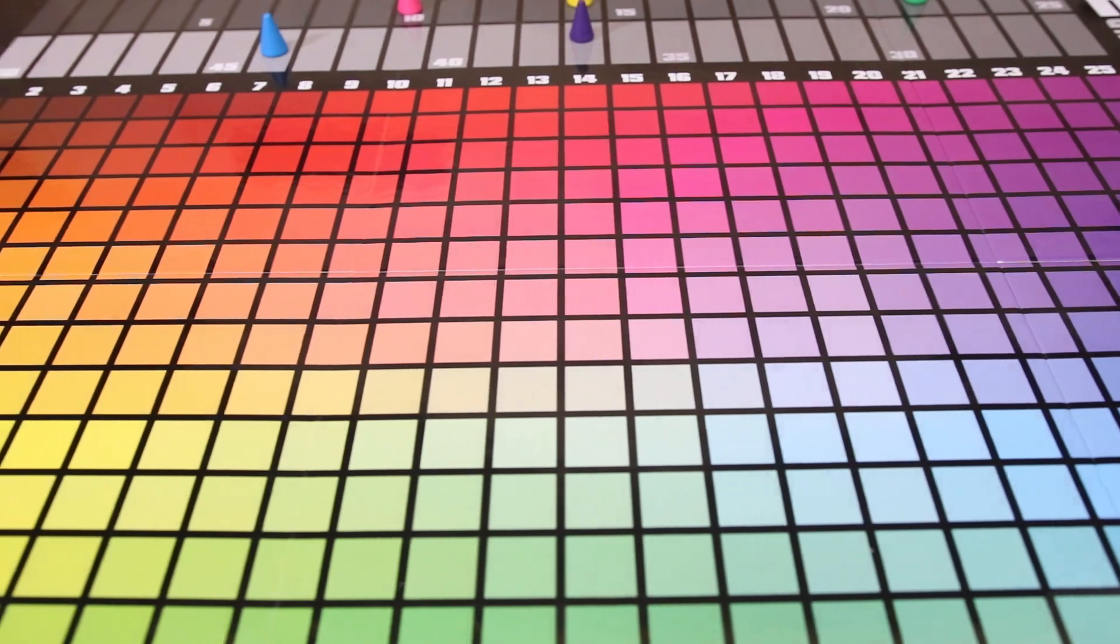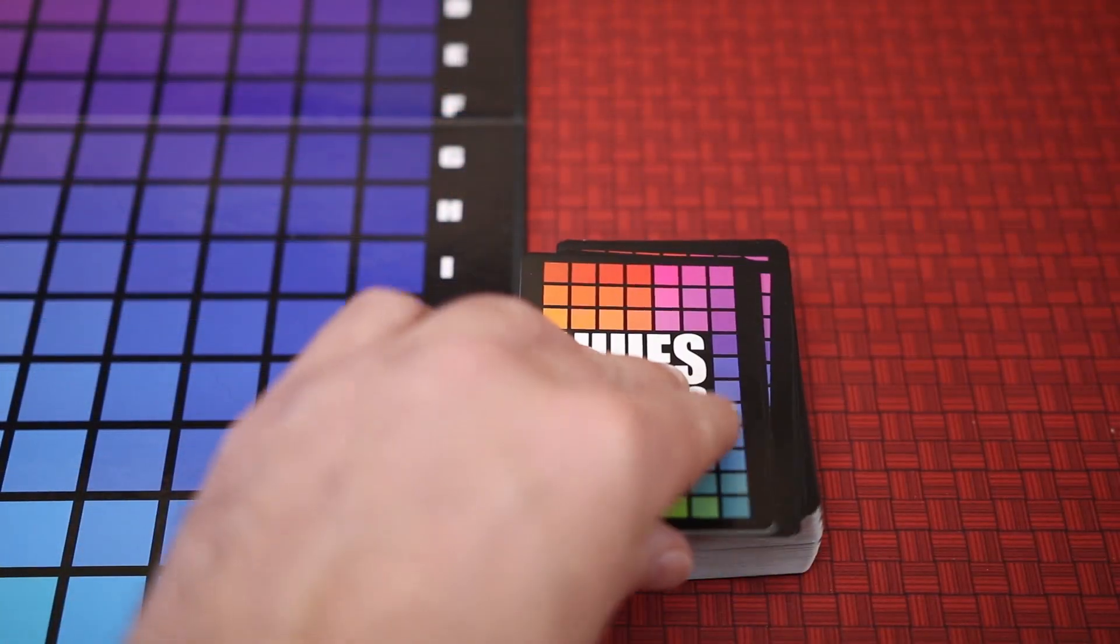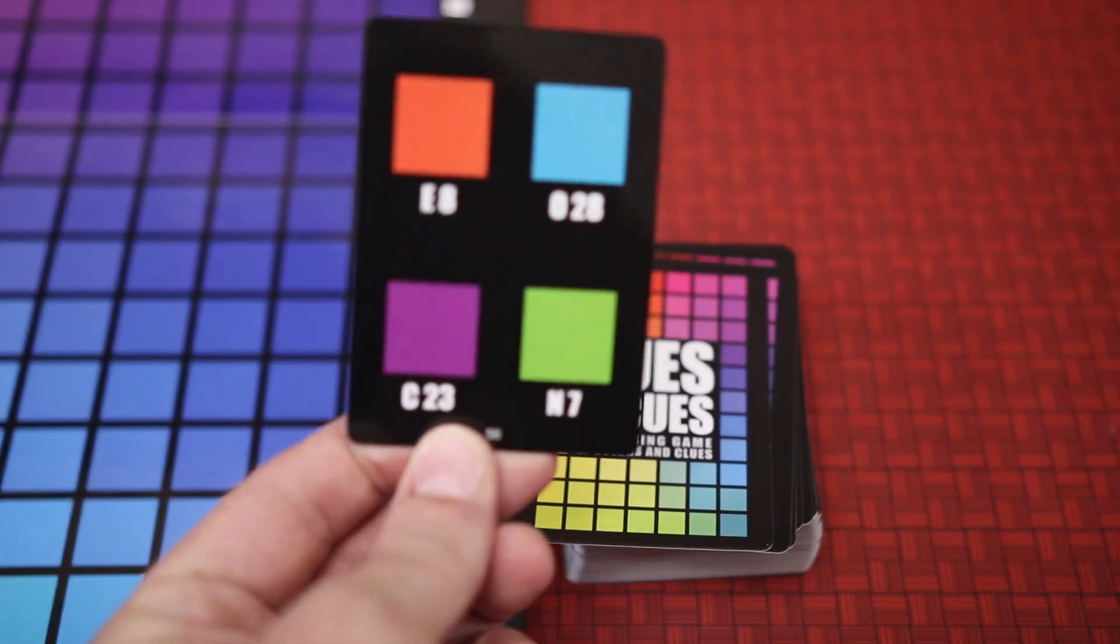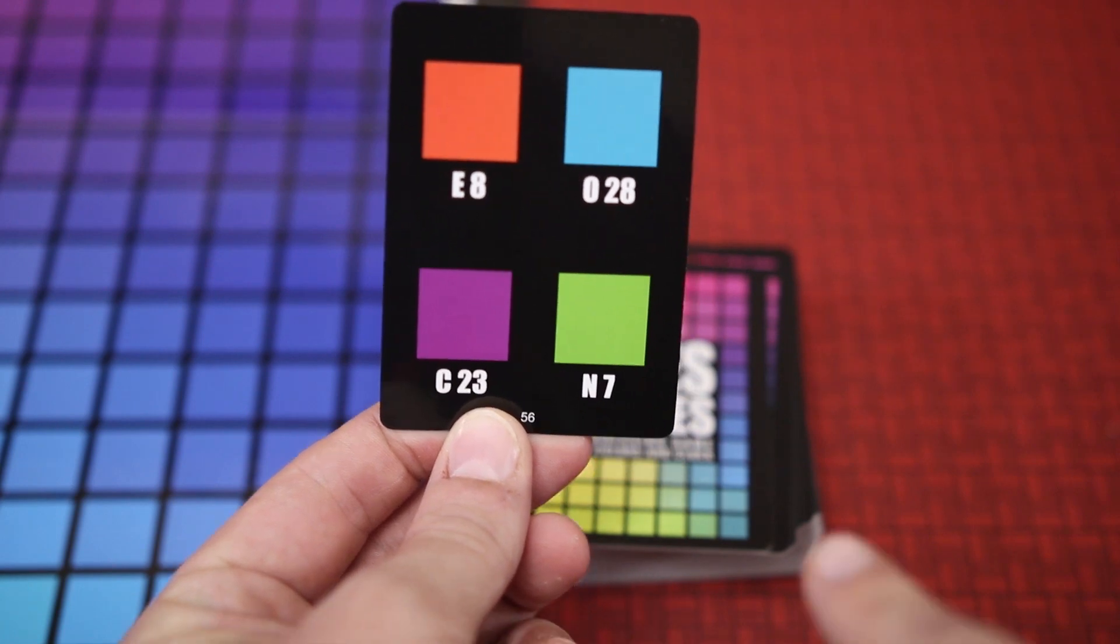Each player will have a chance to be the cue giver, and when they do they begin by drawing a card giving them four options of a specific color with coordinates for its location on the board.